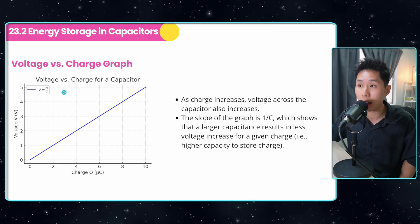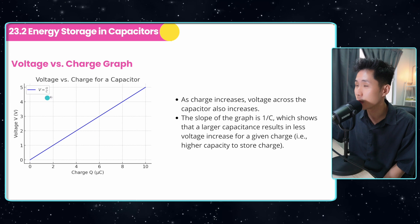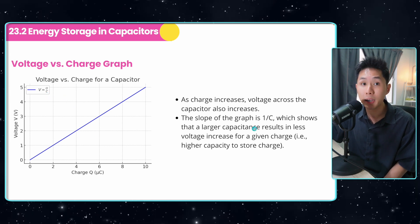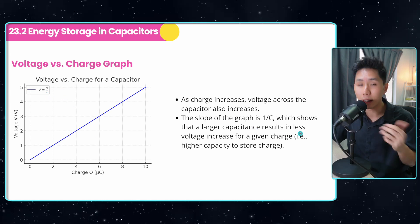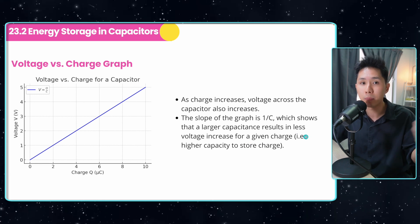So here we have a voltage-charge graph, you can see that as charge increases, voltage also increases, the gradient of it is one over C. What it means is that for a larger capacitance, there will be less voltage increase for a given charge, it increases much slower.